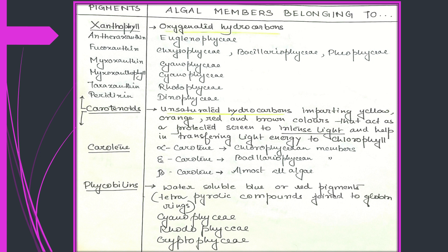Xanthophyll is actually a subclass under the broad heading of carotenoids. Carotenoids can be divided into two groups: carotene and xanthophyll. Carotenoids are unsaturated hydrocarbons that impart yellow, orange, red, or even brown colors. They act as a protective screen against intense light and help transfer light energy to chlorophyll for the purpose of photosynthesis.